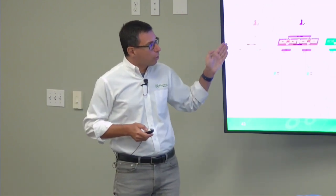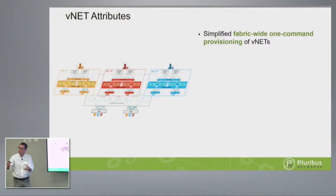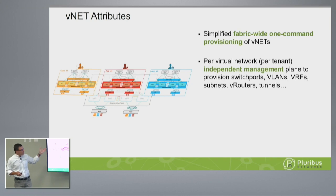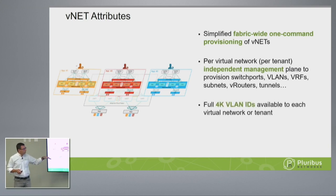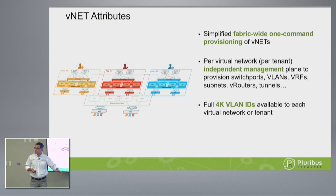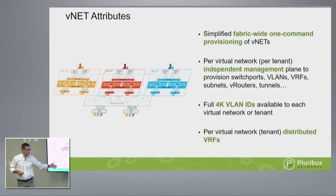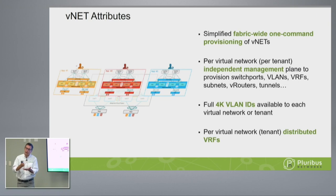With one command you provision the vnet across all switches — you don't have to go into every switch and allocate resources separately. You can do it from any switch with one command. Independent management: every tenant can provision its own resources — VLANs, tunnels, virtual routers, etc. You have the full 4K VLAN ID available, so there is VLAN reuse. Coca-Cola tenant can have VLANs 1000 to 2000, same numbers as Pepsi which lives in an adjacent tenant. Tenants are separated by physical ports, or by shared ports where the VNI mapped to the tenant separates VLANs at the data plane level.